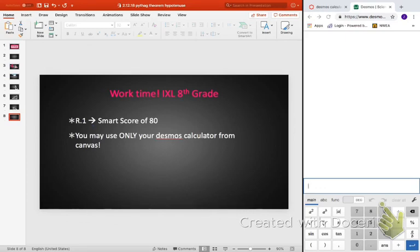All you need to do is upload those notes that you just took to Canvas under the e-learning assignment. And, then you need to go to R.1 on 8th grade iExcel until a smart score of 80. Only use your Desmos calculator, please. If you have any questions, don't remember your password, username, anything, email me. I will be on the computer all day. Thank you.